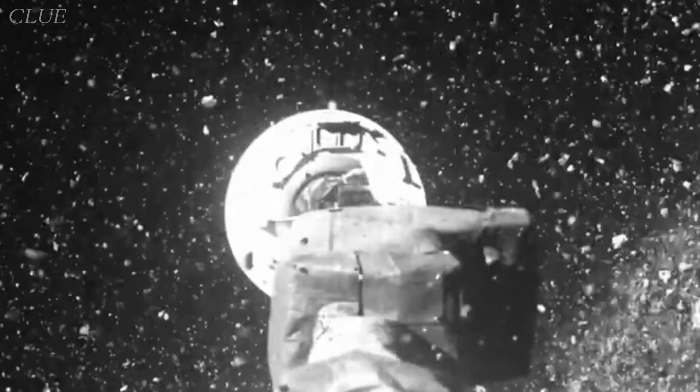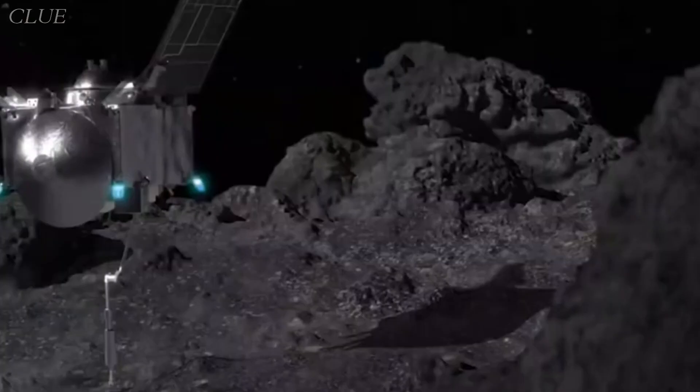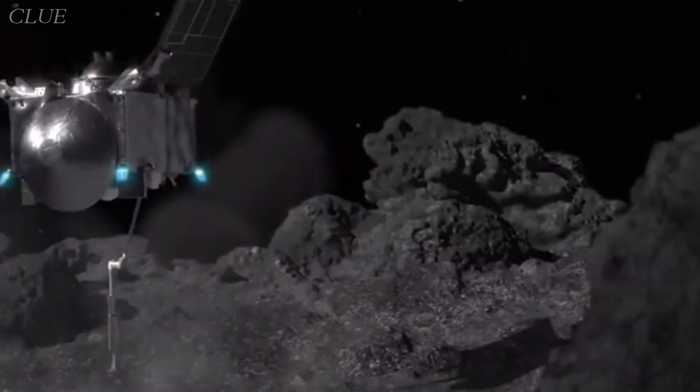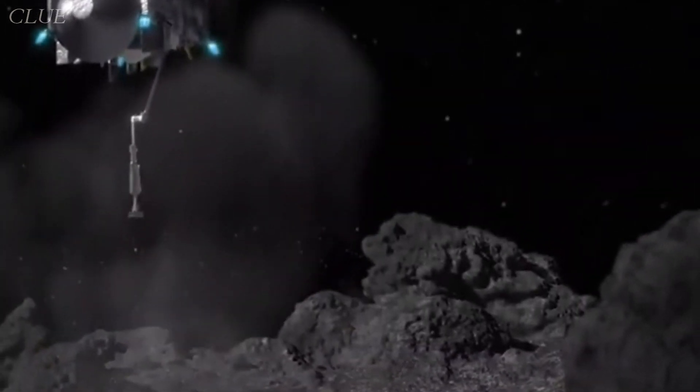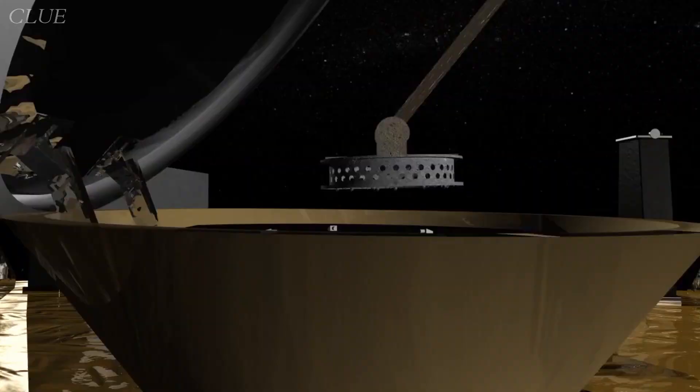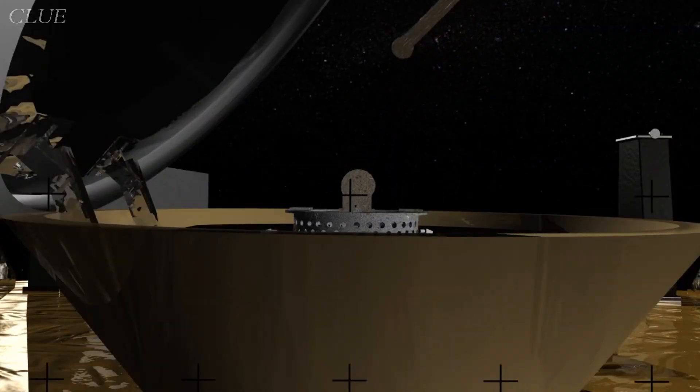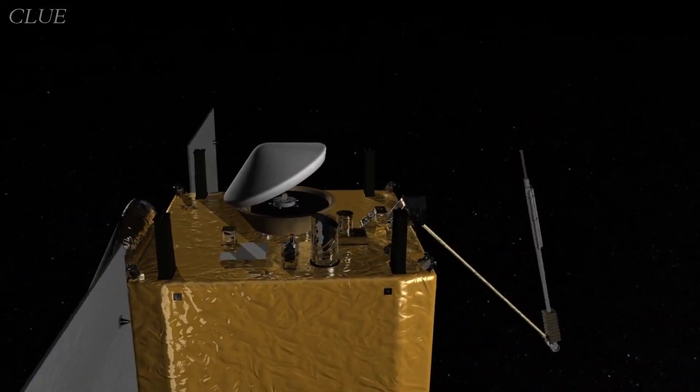At the end of five seconds, the back-away maneuver was executed flawlessly, ensuring a safe departure from the asteroid's surface. With the precious sample collector head safely tucked away, the sample return capsule's lid was closed and securely latched.